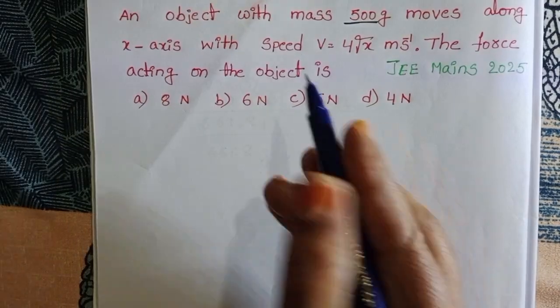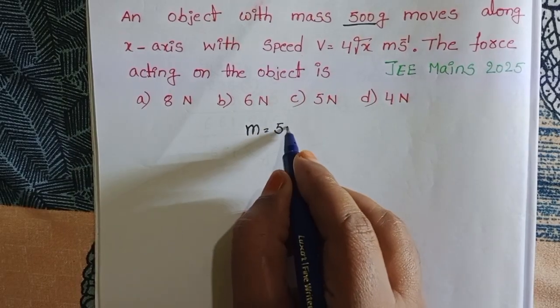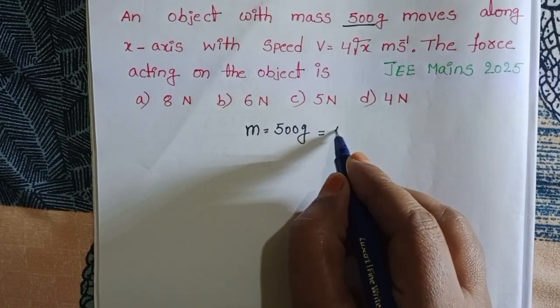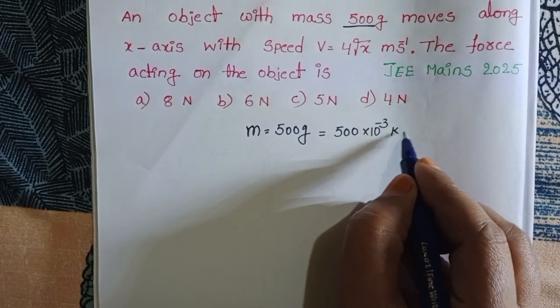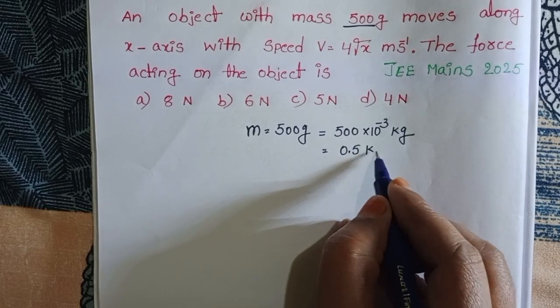In this question, the mass of the object m equals 500 grams. Convert to kg: 1 gram equals 10 to the power minus 3 kg. This becomes 0.5 kg.